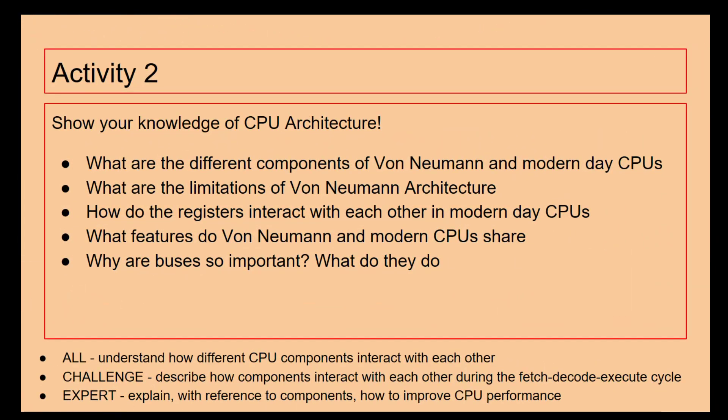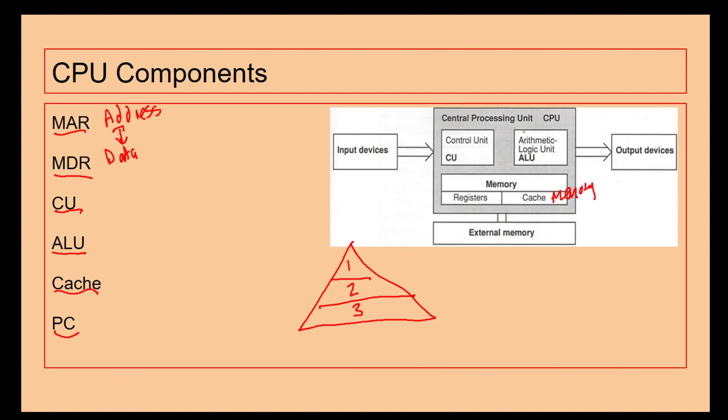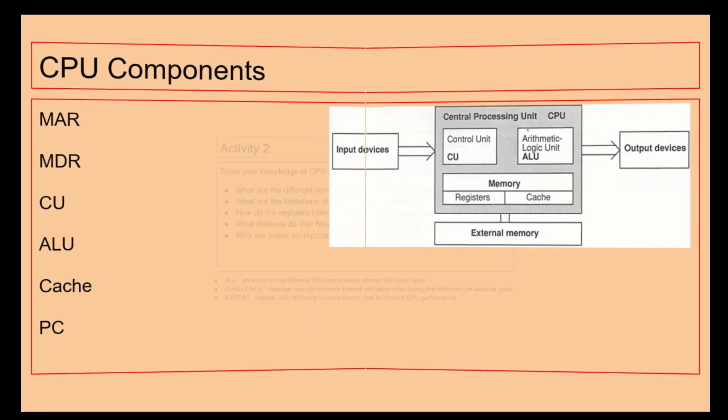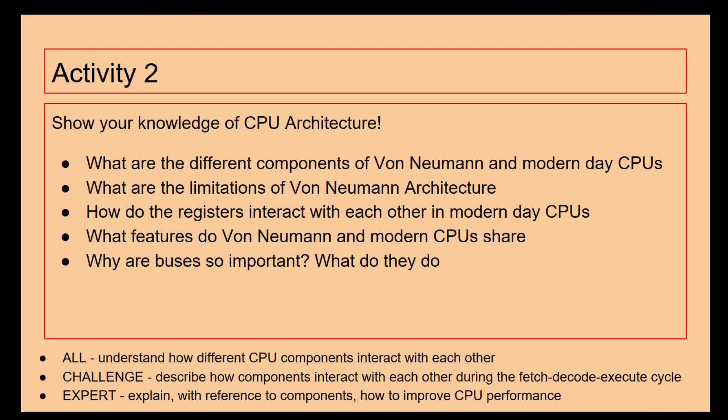What I want you to do is show me different components of Von Neumann and modern day CPU architecture. What are the limitations of Von Neumann architecture? How do registers interact with each other? What features do Von Neumann and modern CPU share? And why are buses so important? We've got many more buses sharing information between each of the different pieces of hardware. Why is that so important?